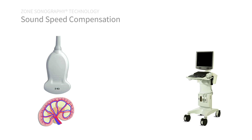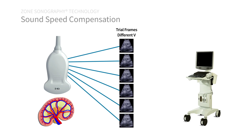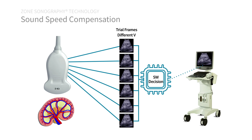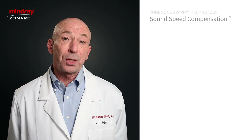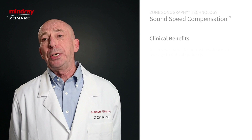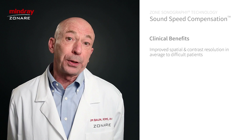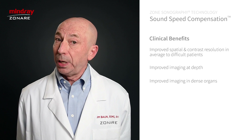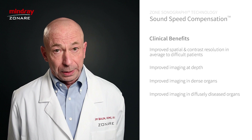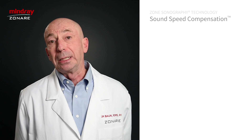Automated sound speed compensation begins with the acquisition of an acoustic data set from the human body. This data set is then sent to channel domain memory, where advanced software algorithms create a series of trial frames, each one constructed assuming a slightly different speed of sound. Smart onboard software then analyzes each trial frame and selects the frame with the best lateral resolution. The system is then recalibrated to this selected sound speed. Clinical benefits include improved spatial and contrast resolution in average and difficult patients, improved imaging at depth, improved imaging in dense organs, and improved imaging in diffusely diseased organs such as fibroid uteri, multinodular goiters, and fibrotic livers.